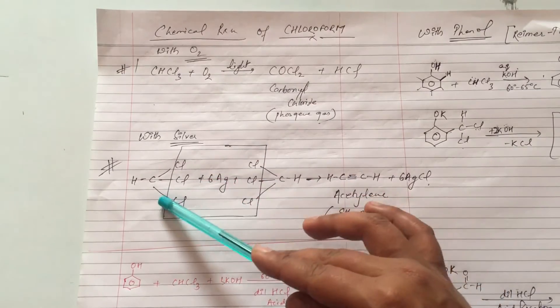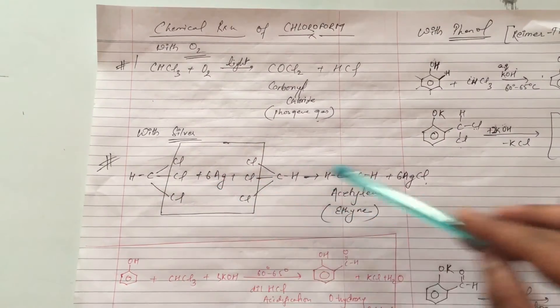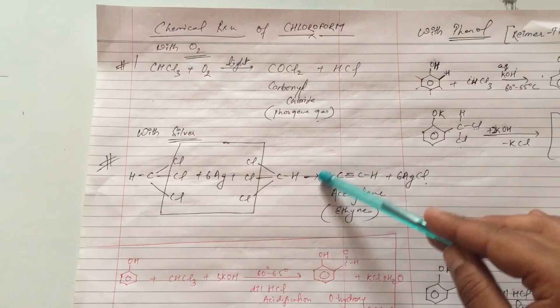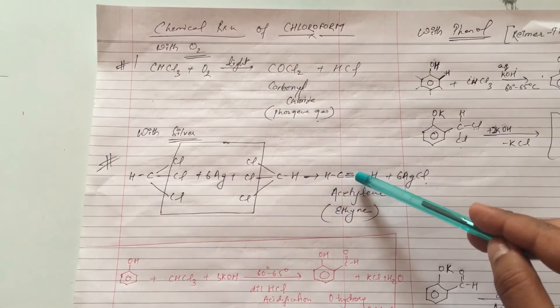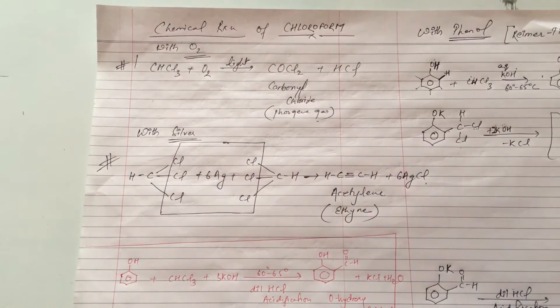Like silver form AgCl, acetylene is a product. Acetylene is C triple bond C. Acetylene is an alkyne.